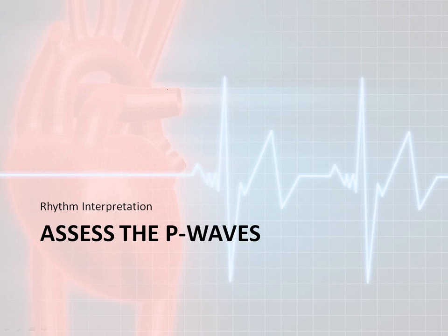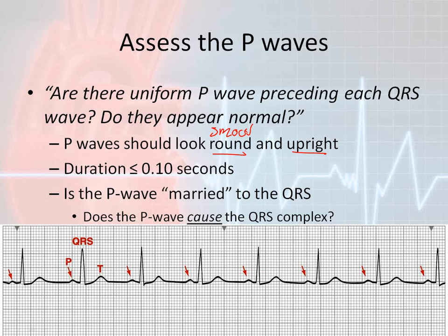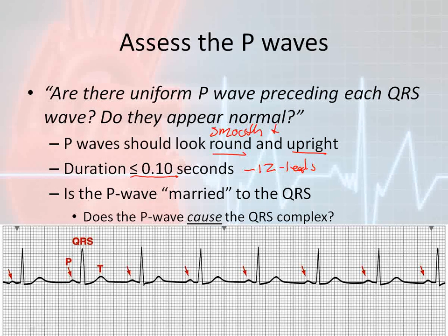Now let's go ahead and assess the P waves themselves. Whenever you look at the P waves, you want to determine: are the P waves uniform, are they preceding each QRS complex, and do they appear normal? Normal P waves should be upright, smooth, and round. The duration of the P waves should be less than 0.10 seconds — this will be more important next semester when we start talking about 12-leads. Also ask: is the P wave married to the QRS complex? That means, does the P wave cause that QRS complex?